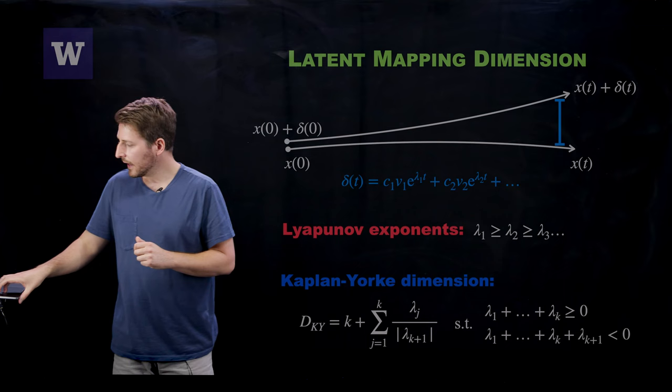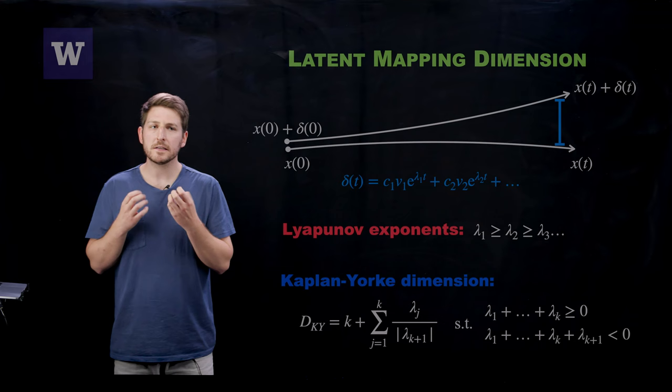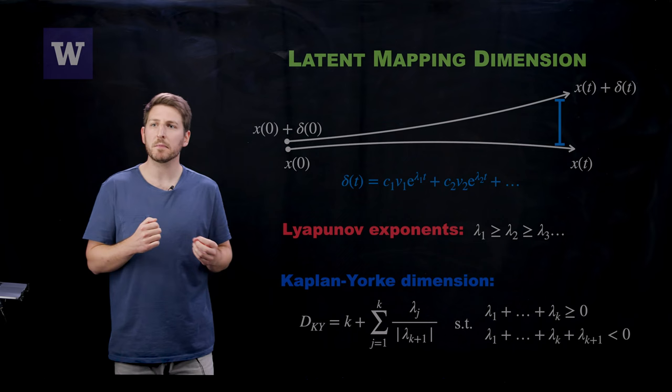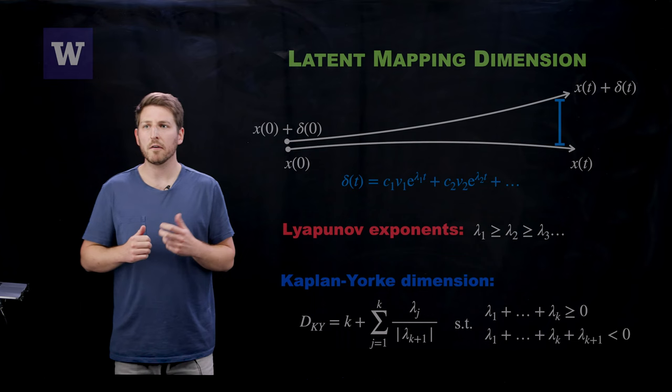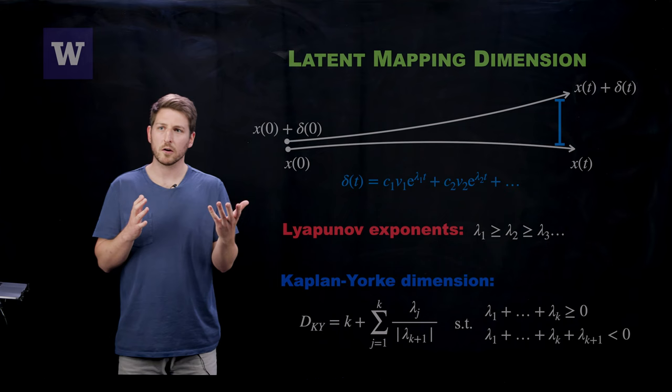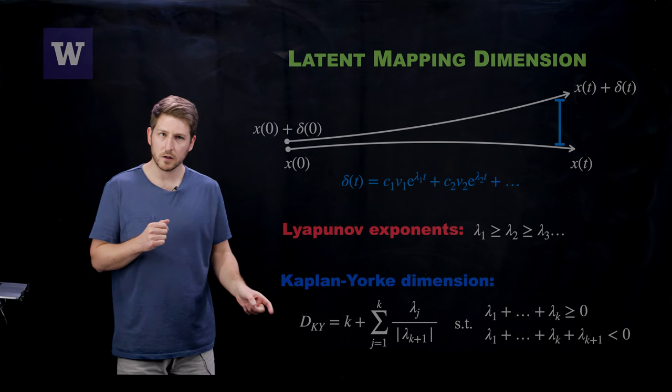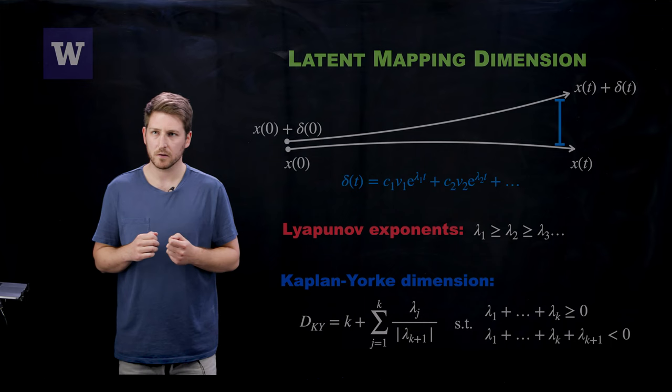And therefore, we can estimate the dimension of the chaotic attractor in the continuous time dynamical system using the Kaplan-Yorke dimension. So this is coming from the Kaplan-Yorke conjecture that says that this dimension is the Hausdorff dimension of that chaotic attractor. And since we are moving to a Poincaré section, we will take one dimension off of this Kaplan-Yorke dimension, and that will be our dimension of the latent space inside of the network.